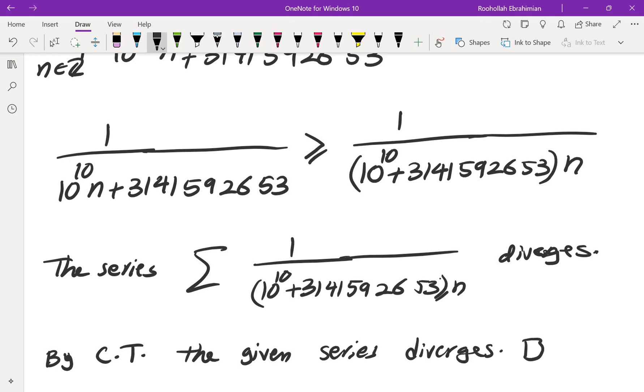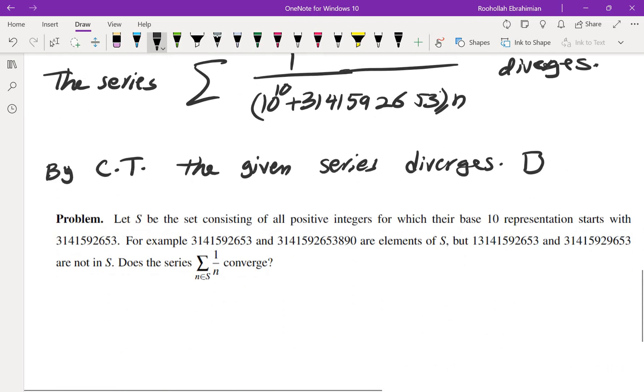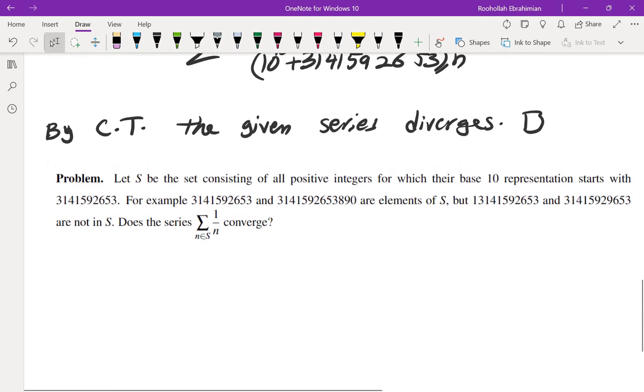So if you find this problem interesting, I would propose a similar problem for you to think about. Here's a similar problem. Let S be the set consisting of all positive integers for which their base 10 representation starts with these 10 digits. So not just 3141592653 appears somewhere in their decimal representation, but it starts with this.